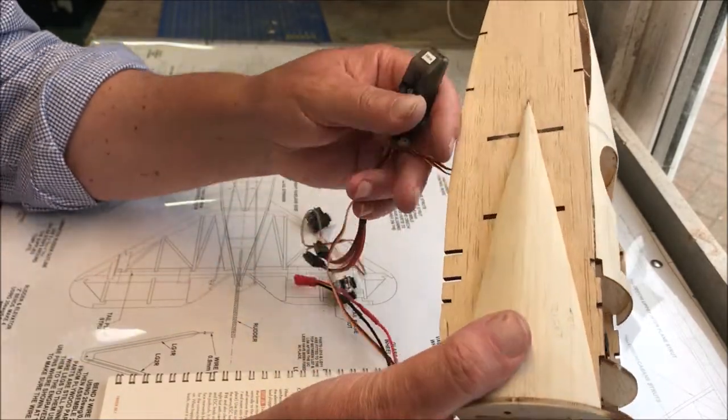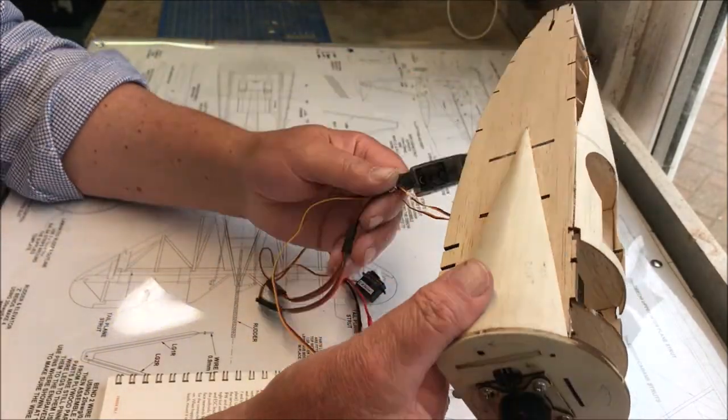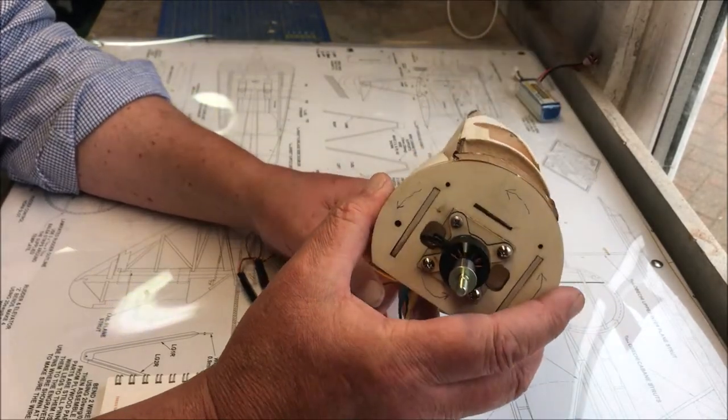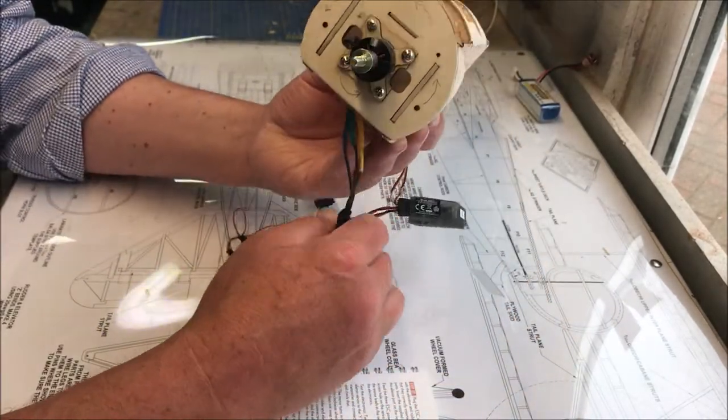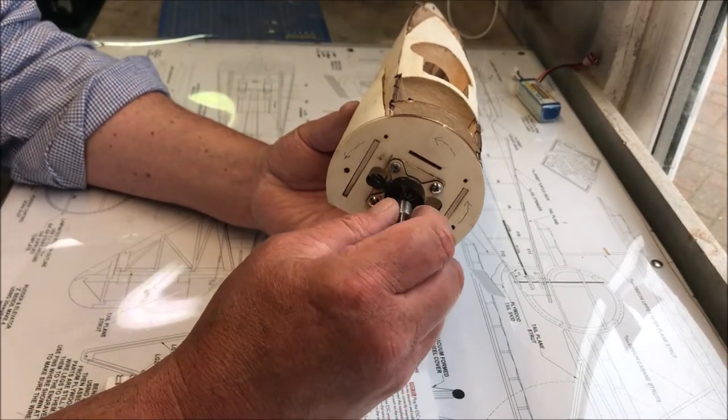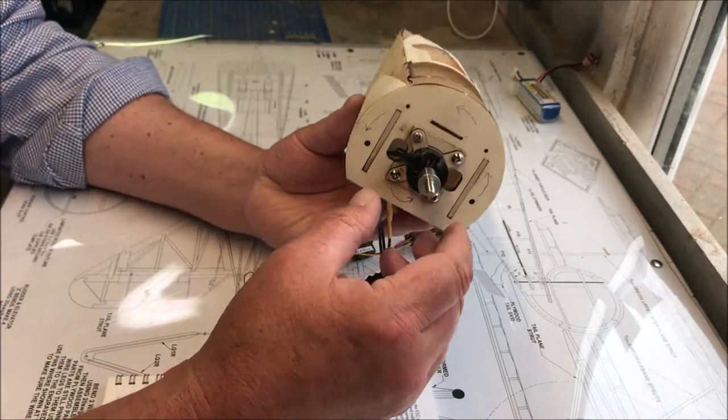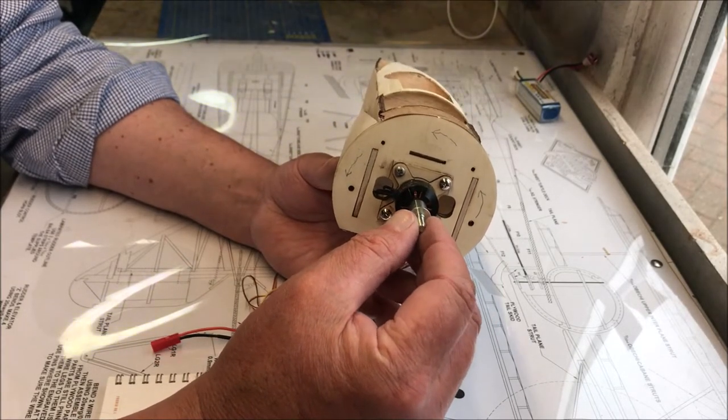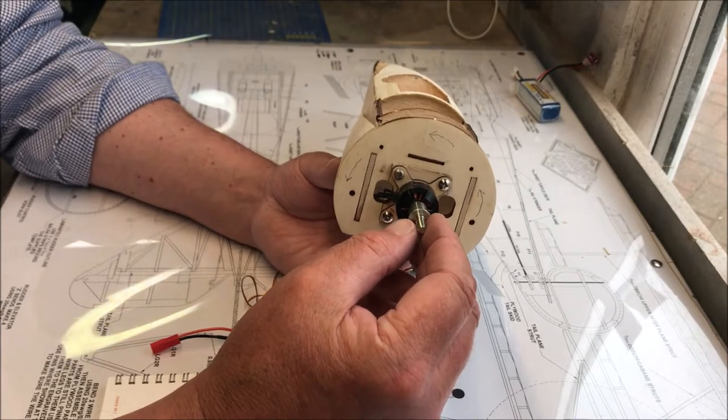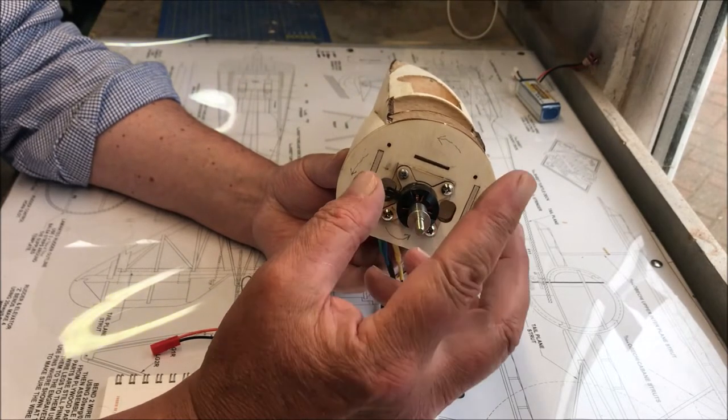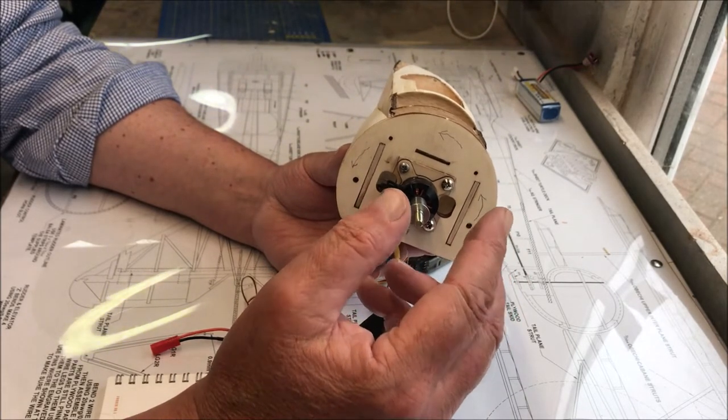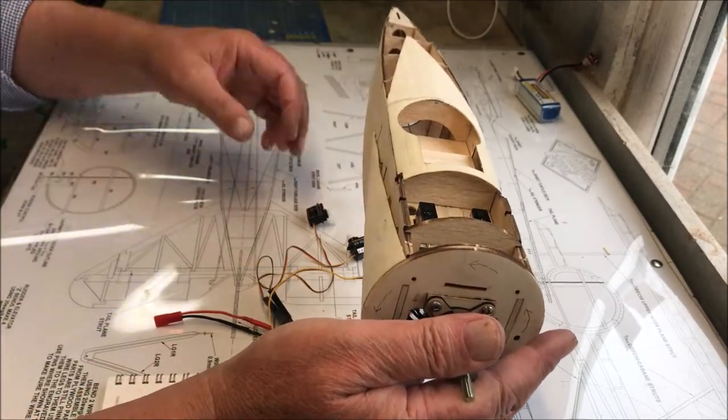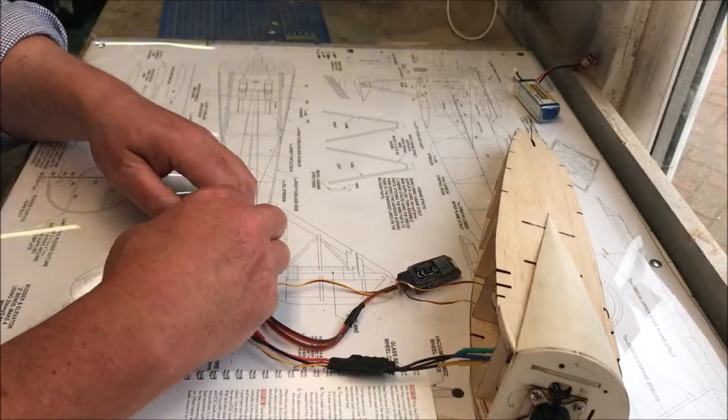I'm going to cut these to 13 mil and put some Pozidriv screws in so you're not going to slip at some later date. I've made sure this is binded, I've attached the battery, I've checked that all the servos are working and that the ESC is working as it should. The rotation of the motor is the correct rotation.